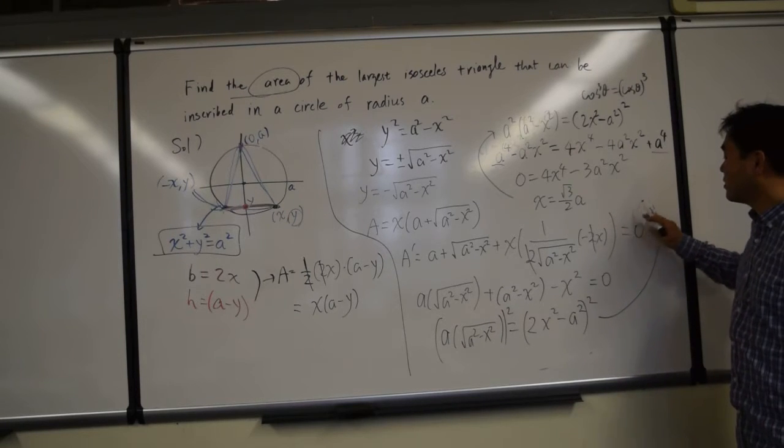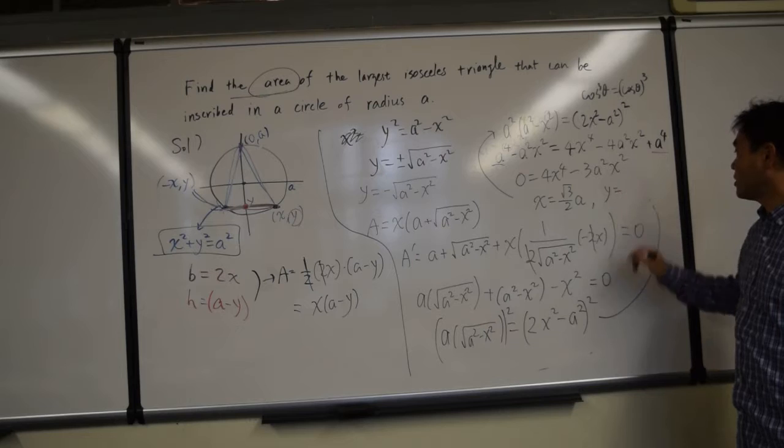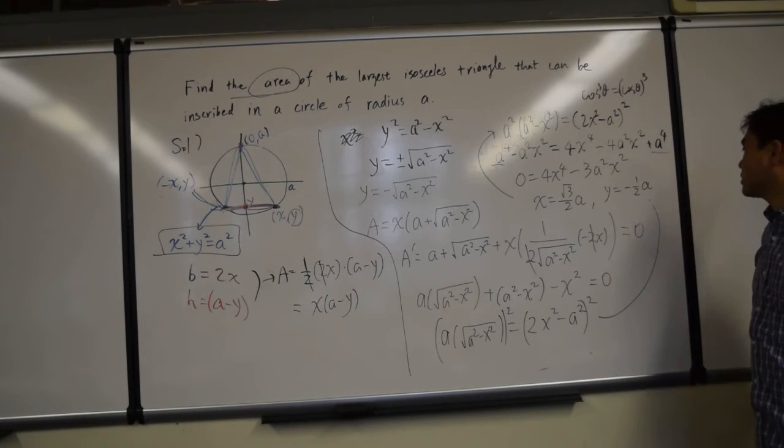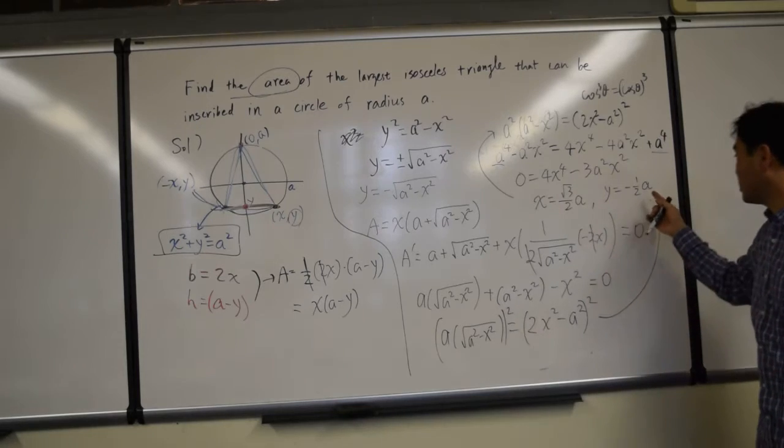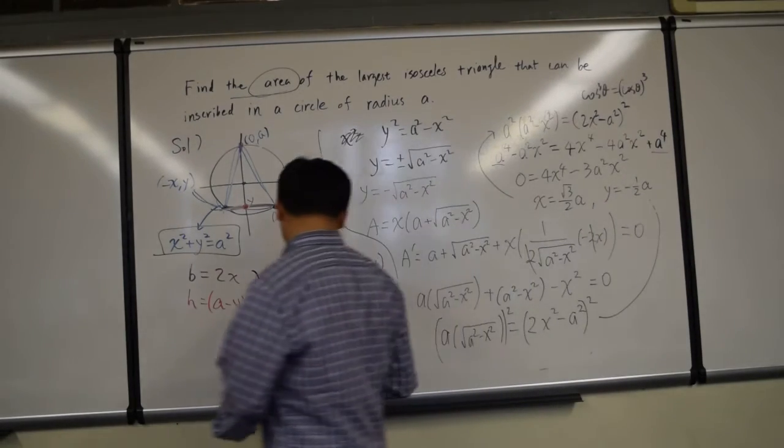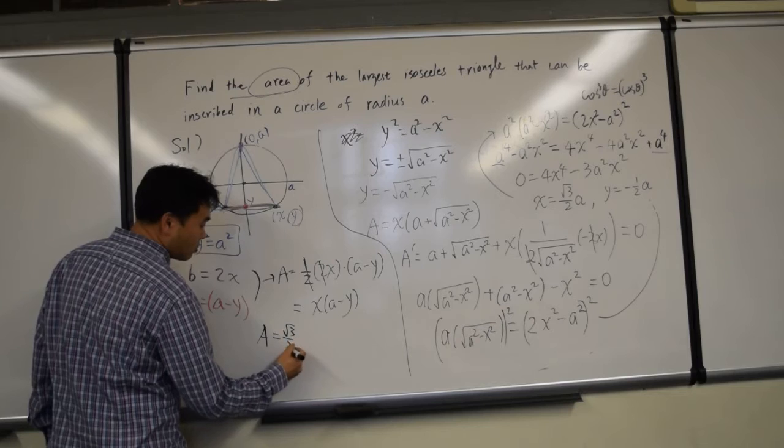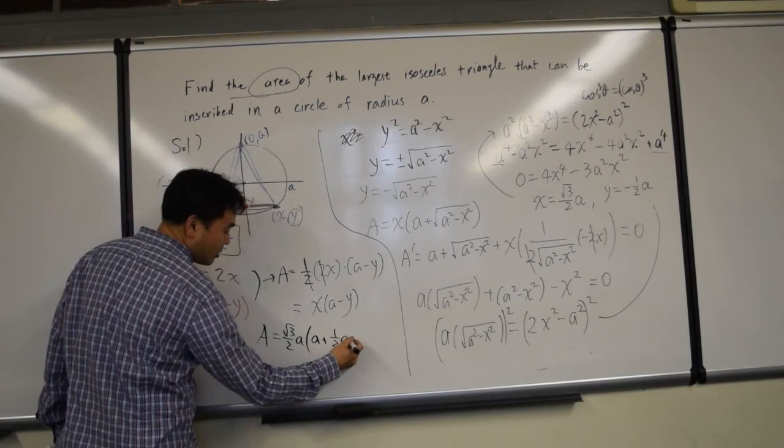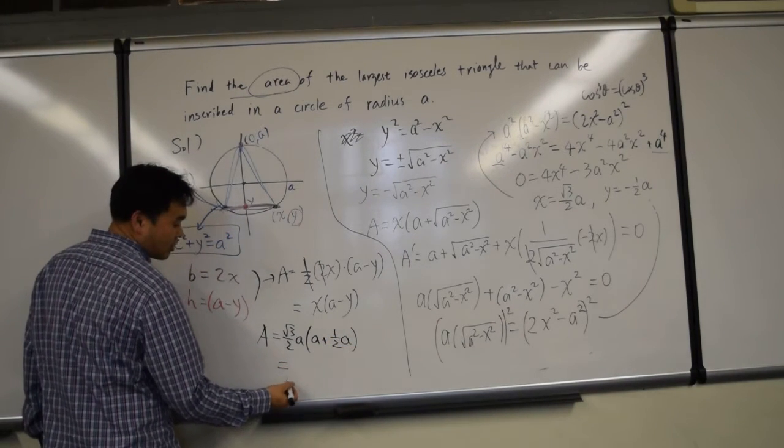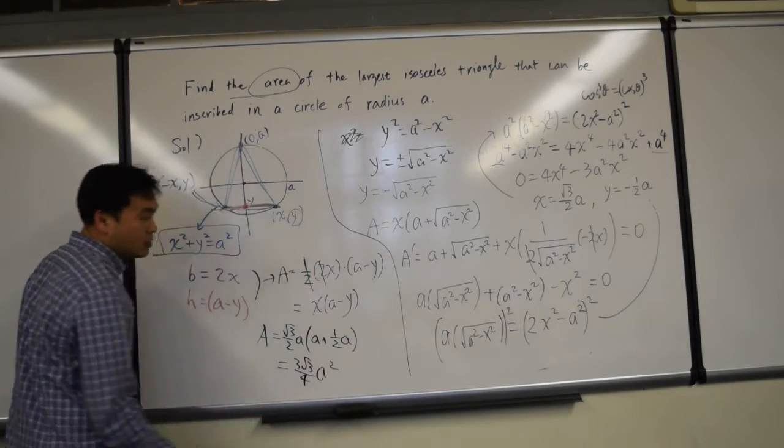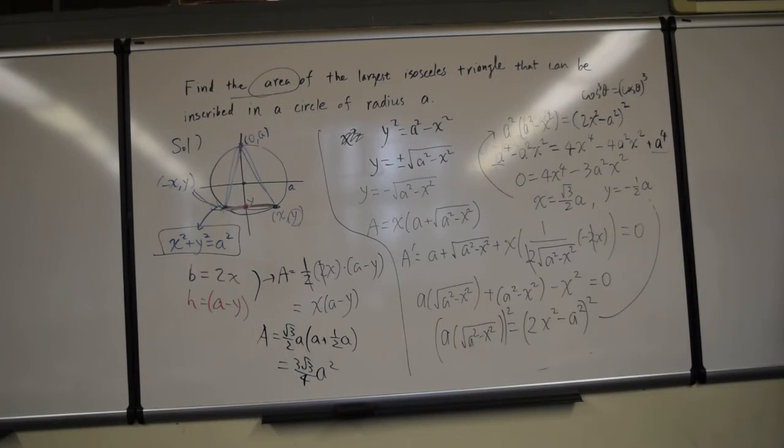And for that, you're going to get y as negative 1 half of a. If you plug it in here and solve for y, you'll get that. And then, once you plug this in here, the area will be x is square root of 3 over 2, a, whereas a minus negative 1 half a will be this. So you get the same answer as before. You get 3 radical 3 over 4, a squared. So you get the same answer.